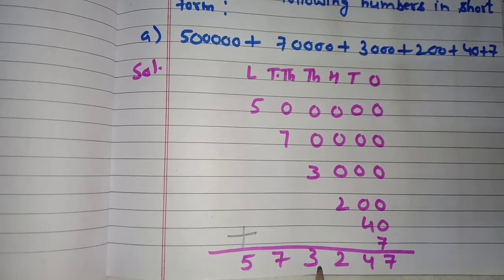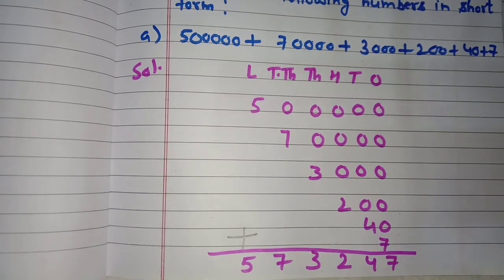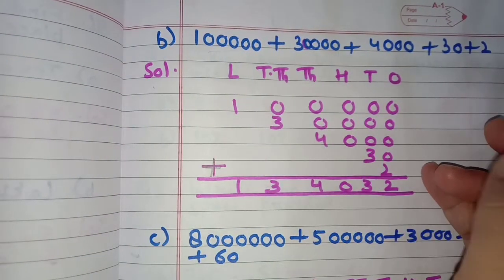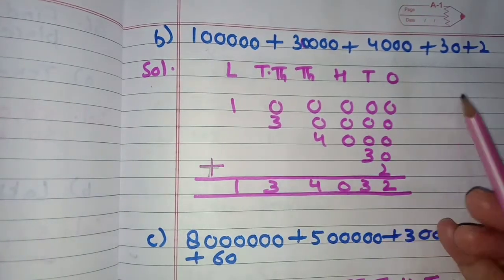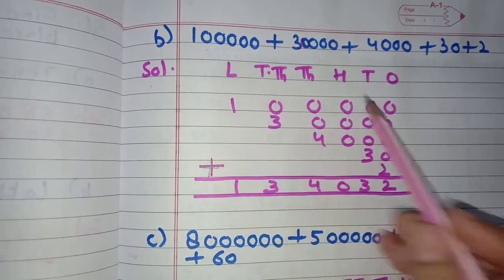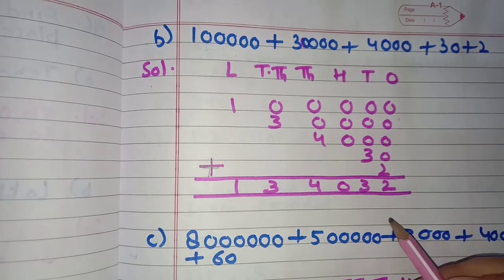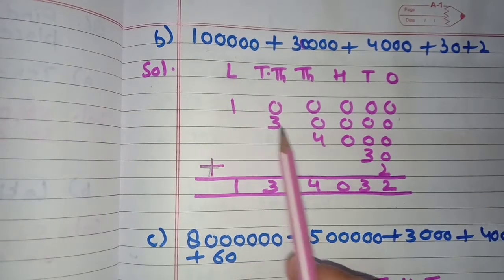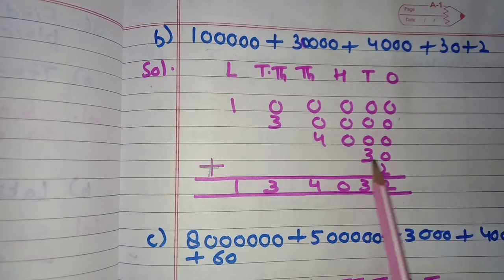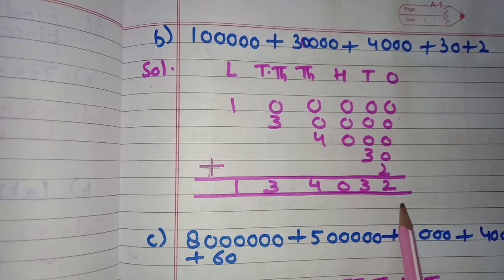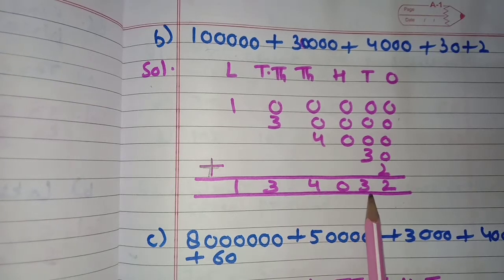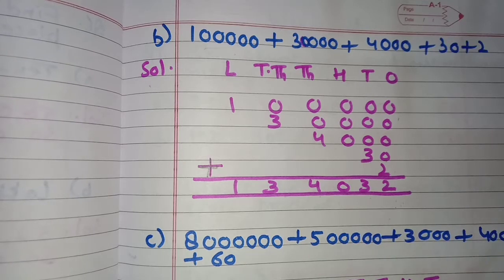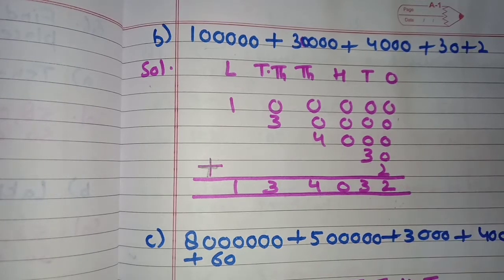Part B: the expanded form is given. We mention the place values and write the numbers, then add from the ones place. The values are 1 lakh, 30,000, 4,000, 30, and 2. The short form is one lakh, thirty-four thousand, and thirty-two.